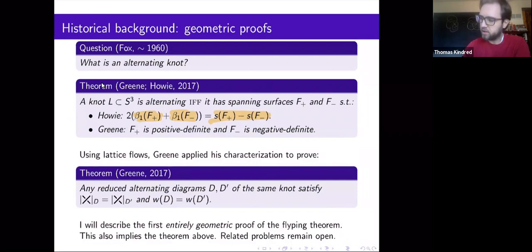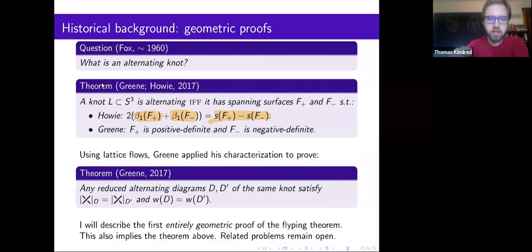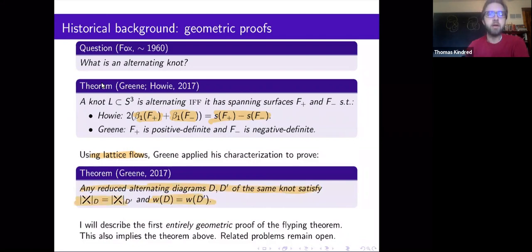Greene's characterization holds not just for knots in the three-sphere but in a more general context. Greene also used this characterization to give the first geometric proof of part of Tait's conjectures. He used his characterization of alternating links together with lattice flows on the Tait graphs for the chessboard surfaces to prove the second Tait conjecture that the writhes are equal and part of the first Tait conjecture — namely that the crossing number is always equal for all reduced alternating diagrams of the link — but he didn't prove that that's minimal.